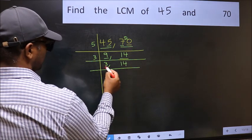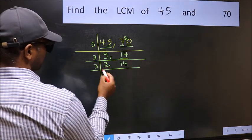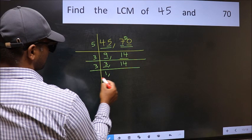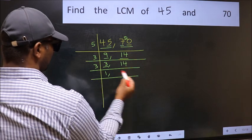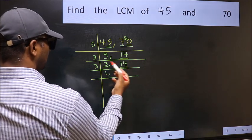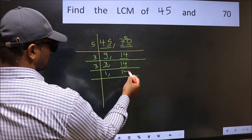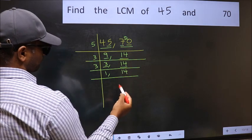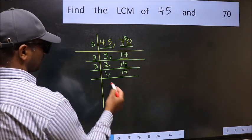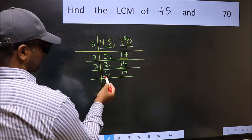Now we have 3 here. 3 is a prime number, so 3 once is 3. The other number, 14, is not divisible by 3, so you write it down as it is. Now we get 1 here.